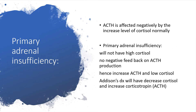How do we come about primary adrenal insufficiency? Normally, ACTH is affected by negative feedback from high levels of cortisol. But in primary adrenal insufficiency, we will not have high levels of cortisol, so there will be no negative feedback on ACTH production. Hence, ACTH level will increase while the level of cortisol will be low. Therefore, Addison's disease will have decreased cortisol and increased ACTH.